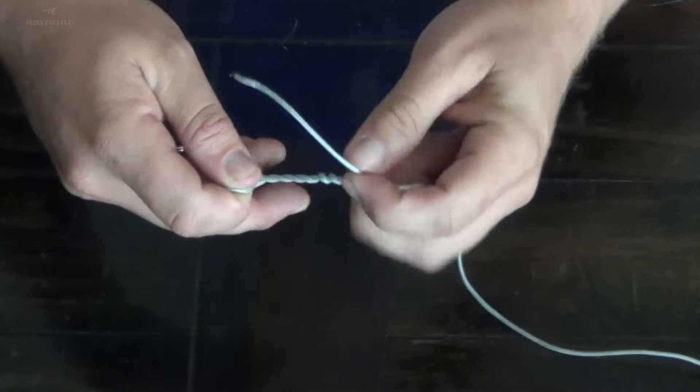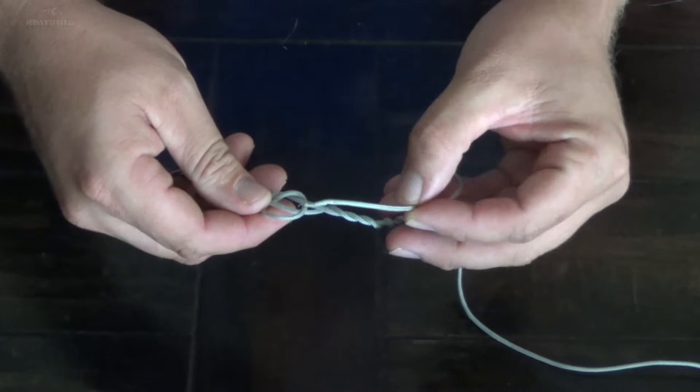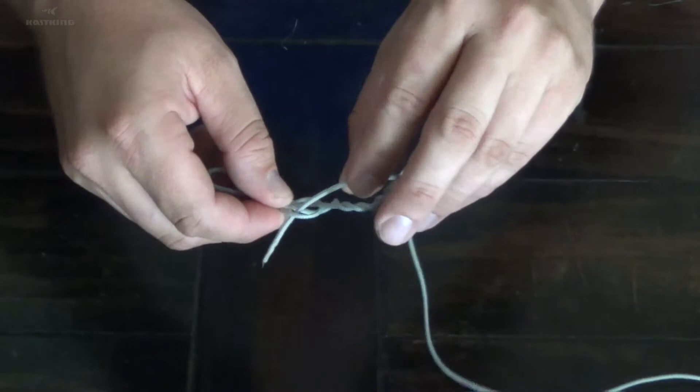Then you'll take your tag end and you're gonna go back through the overhand loop that you made, but you want to go from the opposite direction that you went the first time.